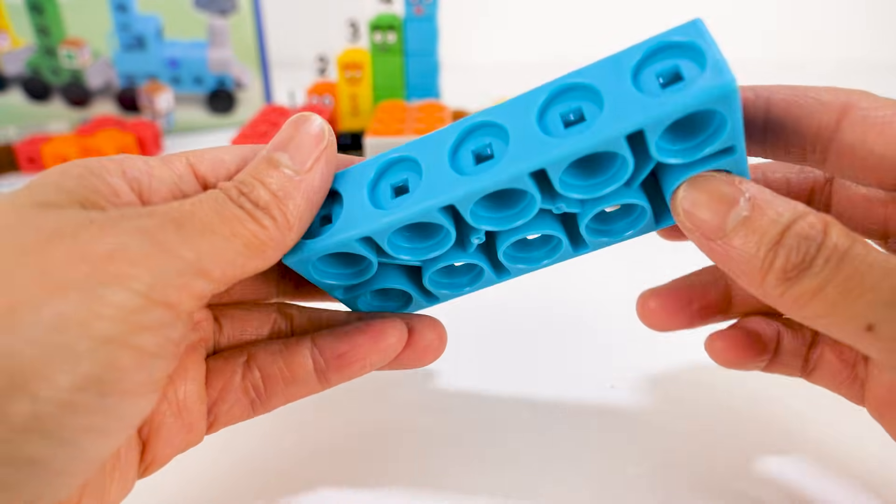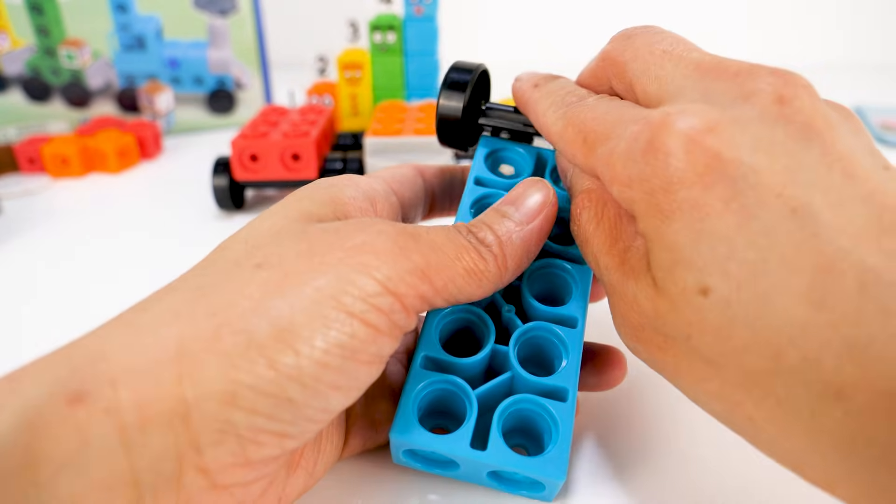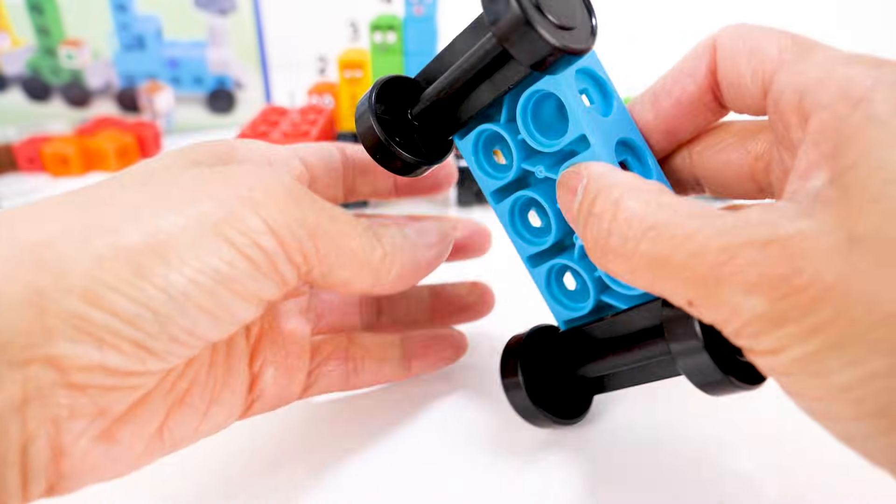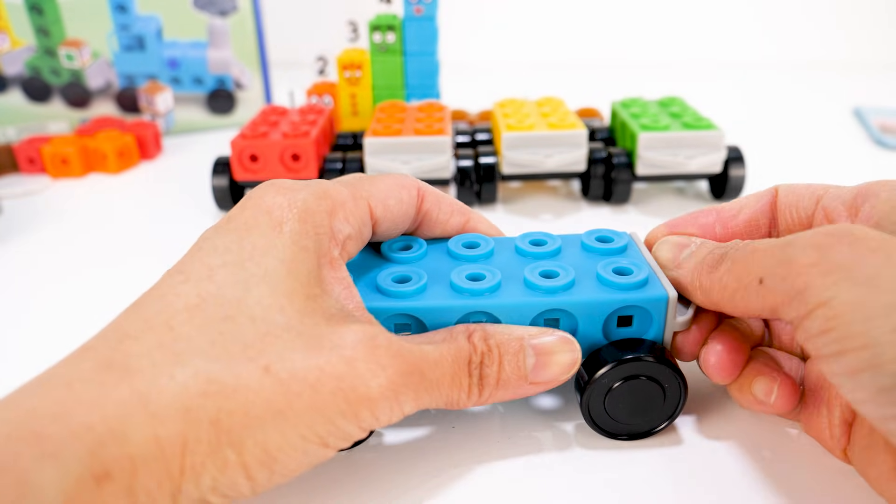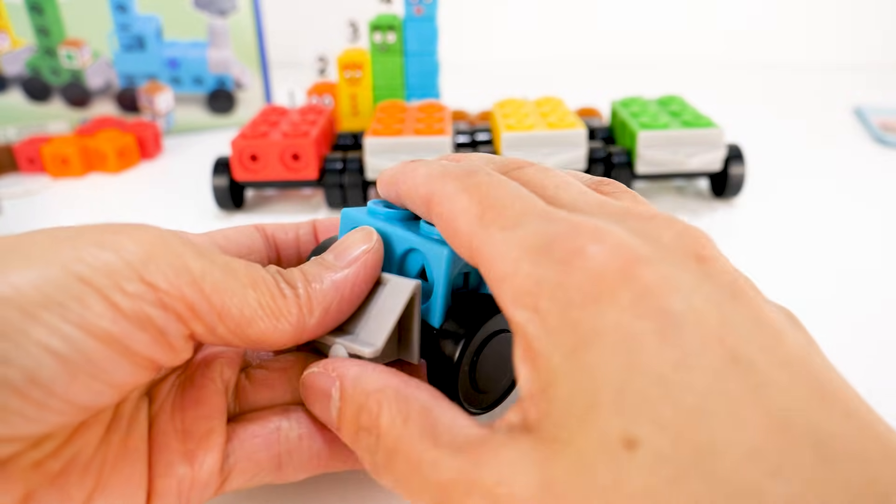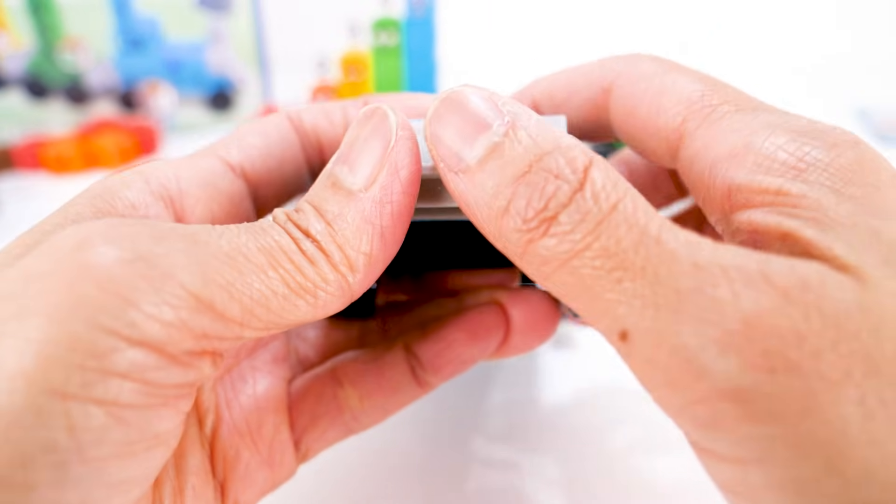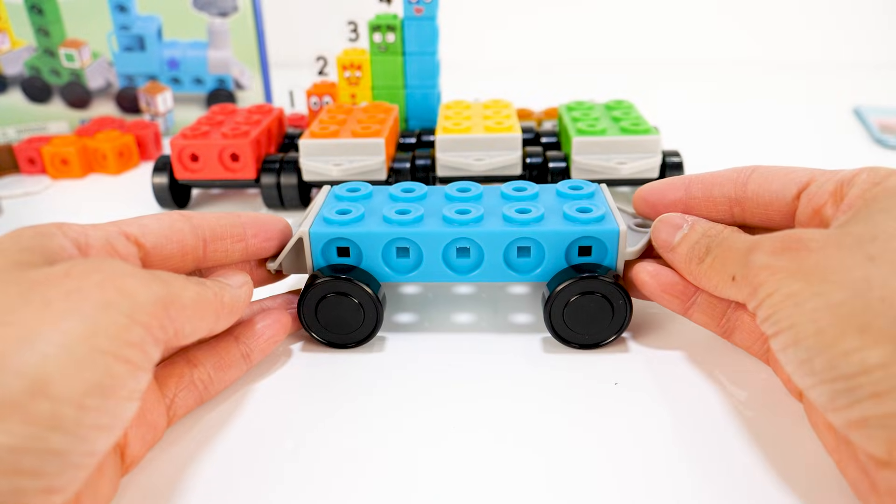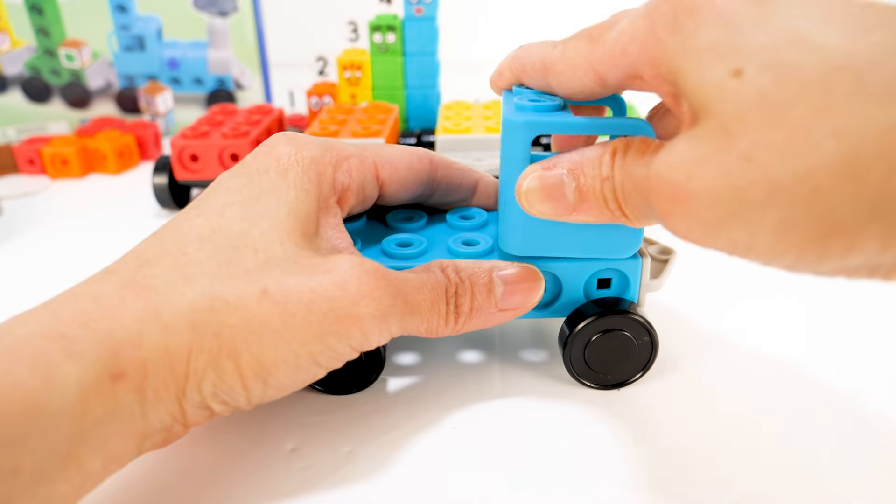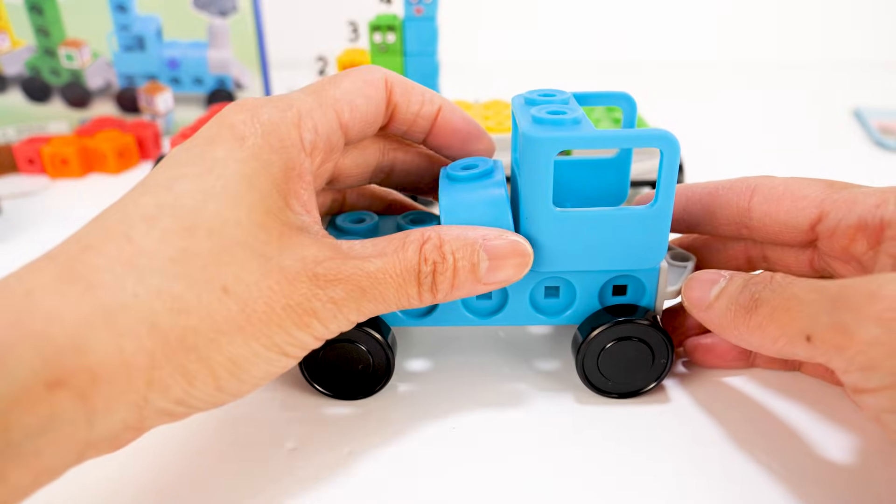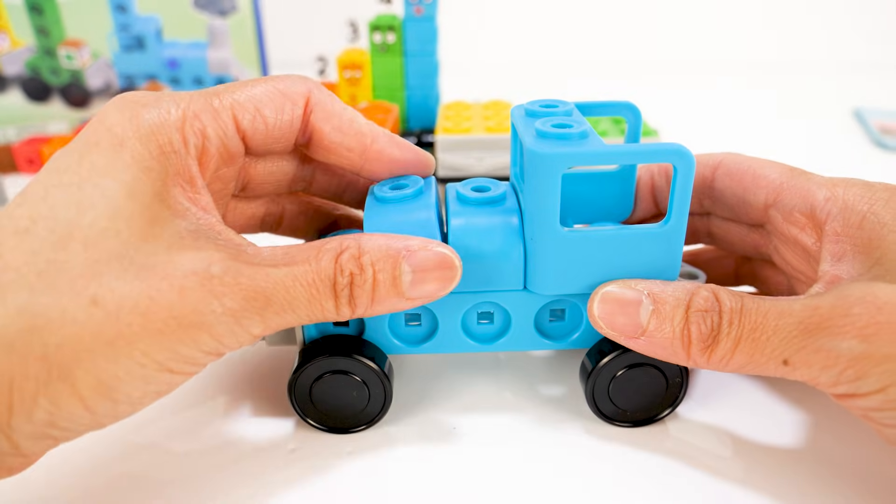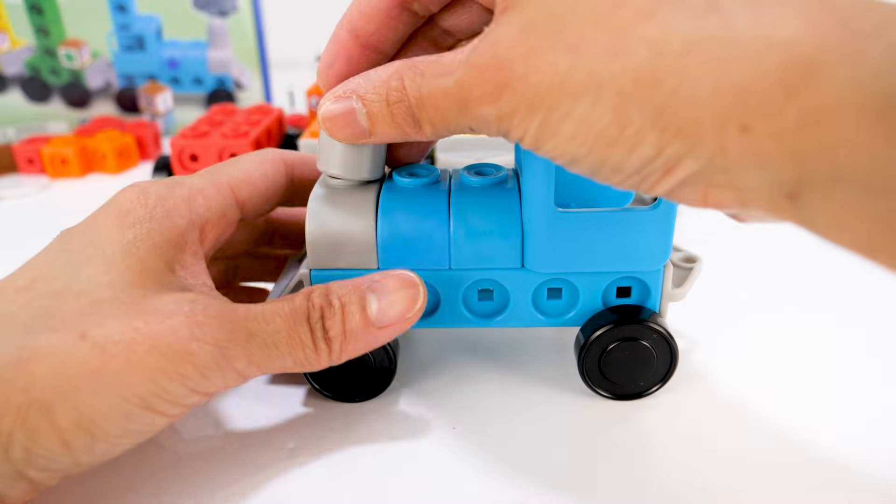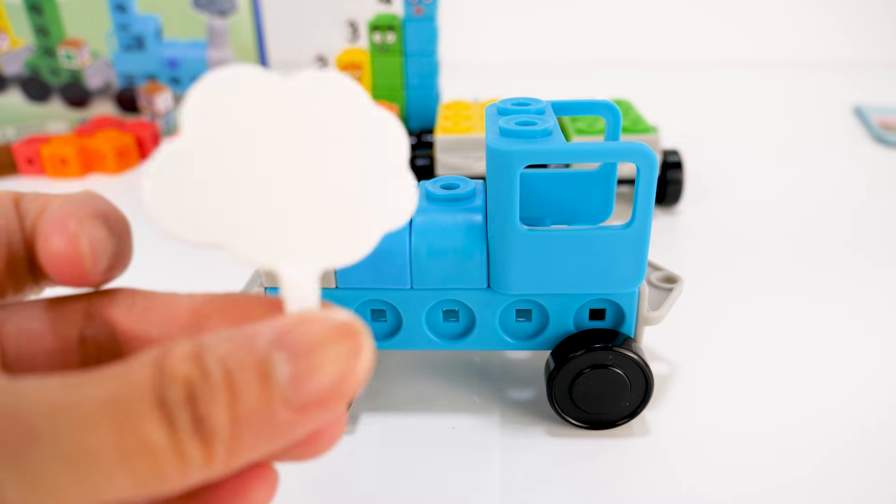Now it is time for the engine. First, let's put on the wheels, back connector, then the cow catcher. Next, we have the cab, the engine, two blue pieces and a grey piece, the chimney, and smoke.